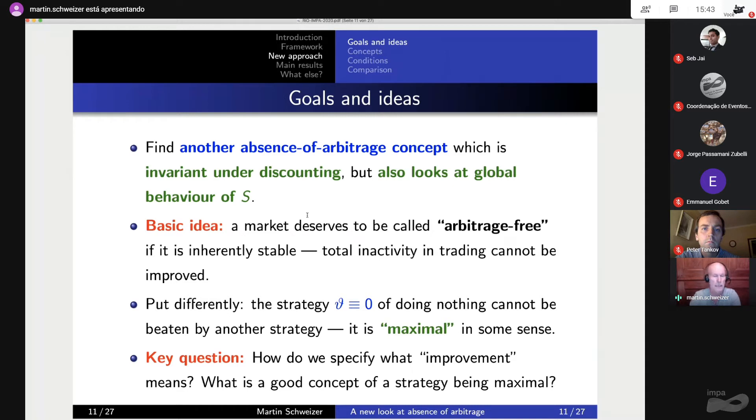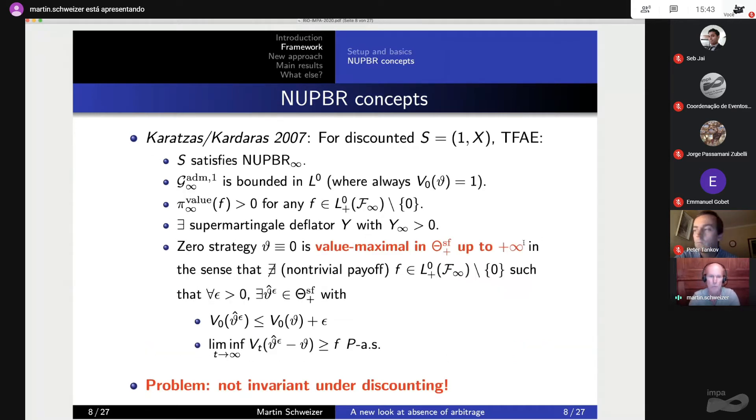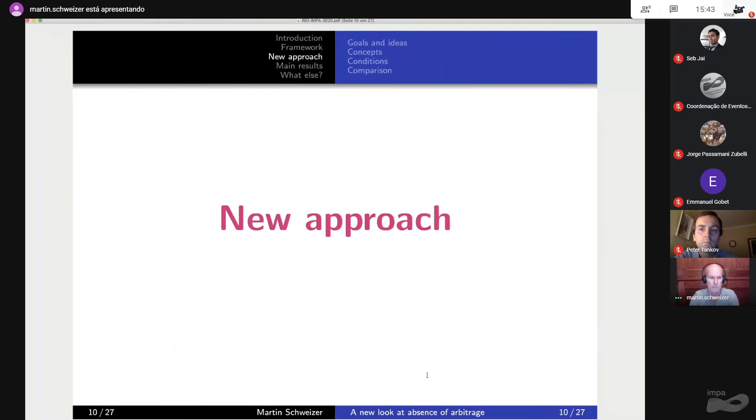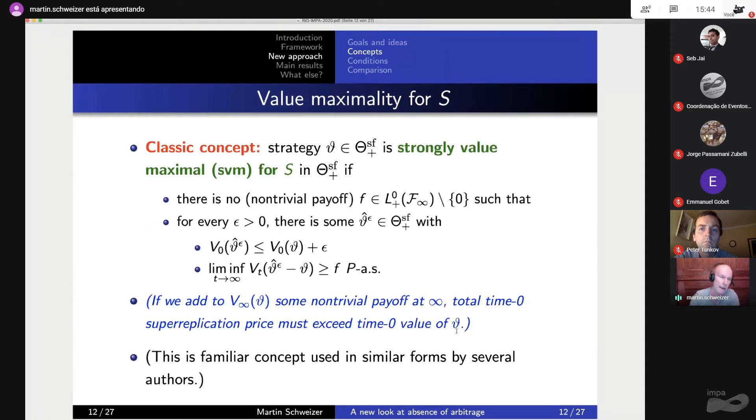But if you have a model on the positive axis and you're only able to say anything up to finite horizon, it makes you wonder, so what happens at infinity? What happens if you allow investment all the way to infinity? So that concept essentially is just a local concept. And what we wanted to do is to find another absence of arbitrage concept which is invariant under discounting, but it also looks at the global behavior of S, of our prices. And the basic idea is similar to what has been done before. We say a market is arbitrage-free if basically the zero strategy is maximal in some sense, and this is similar to what has been done before. So here you have maximality on every finite interval, but then you don't know what happens at infinity, or here you have maximality up to plus infinity, but the kind of maximality here is not invariant under discounting. And so for us the question really was, so how can we define a good notion of maximality that makes things invariant under discounting?